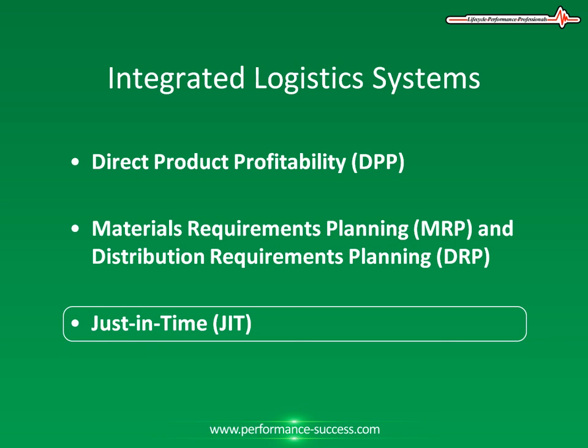The objectives of JIT are vitally linked to distribution and logistics, including the production of goods the customer wants, the production of goods when the customer wants them, the production of perfect quality goods, and the elimination of waste — meaning labor, inventory, movement, and space. There are a number of JIT techniques used to greater or lesser extent by the generally large companies that have adopted the JIT philosophy.